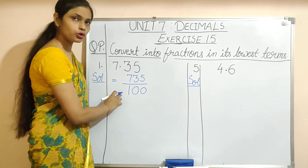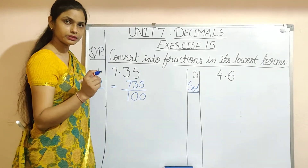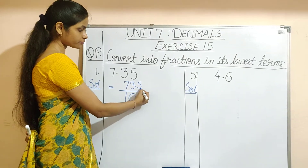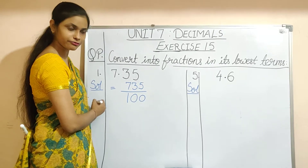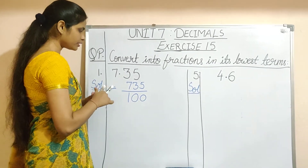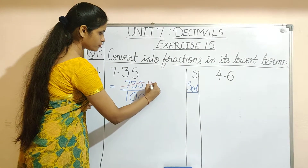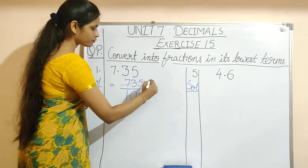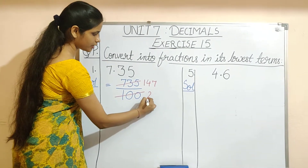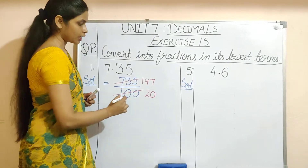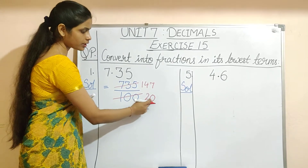So you have converted this decimal into fraction. Now, convert this into lowest term by dividing it by a common factor. You already know the divisibility rule. Here 5 is at the unit place and here it is 0, so they are exactly divisible by 5. When we divide this by 5: 5 ones are 5, 5 fours are 20, 5 sevens are 35, 5 twos are 10, and then this is 0. So now we have 147 as the numerator and 20 as the denominator.